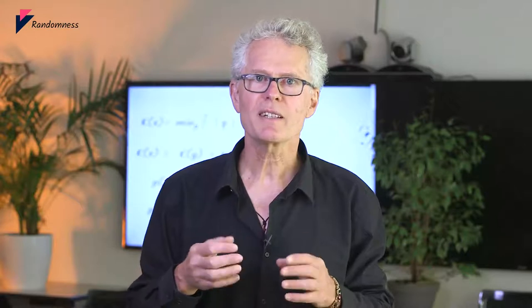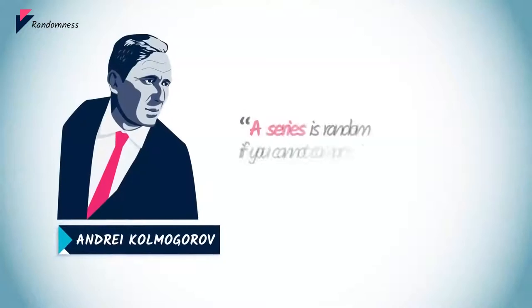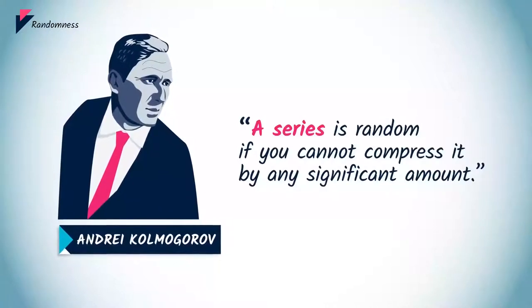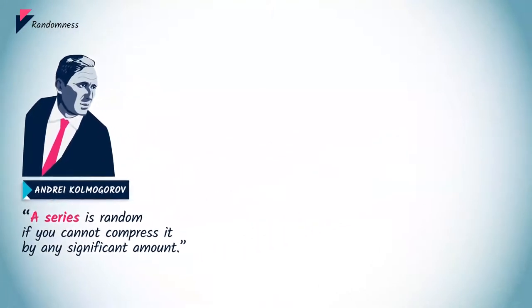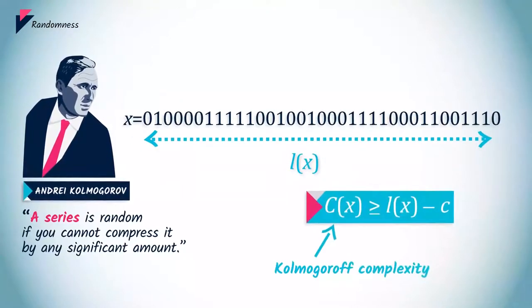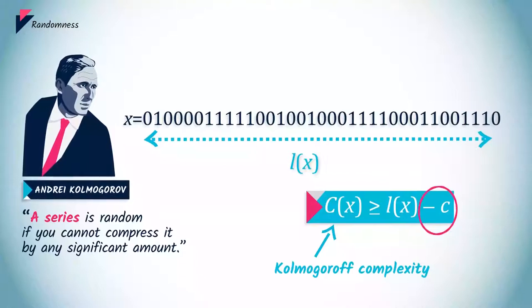Andrei Kolmogorov succeeded in finding a consistent definition of randomness. A series is random if you cannot compress it by any significant amount. In other words, a binary sequence x of length L(x) is random if its Kolmogorov complexity is not much smaller than L(x). The value of the constant c controls how strict we want the definition of randomness to be.